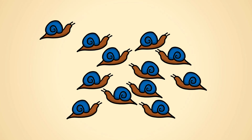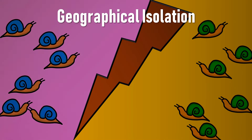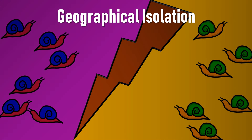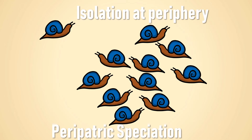Consider a species of snails living together. Due to geographical isolation, the population gets divided and each divided population evolves separately. After a period of time, they can no longer reproduce together, meaning they have evolved into two separate species. This type of speciation due to geographical isolation is called allopatric speciation.